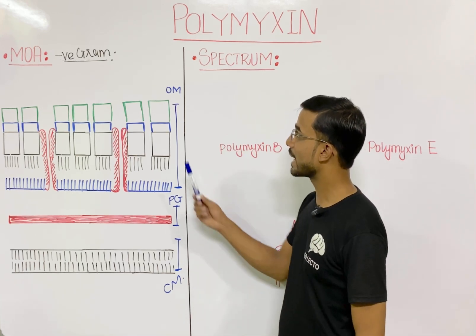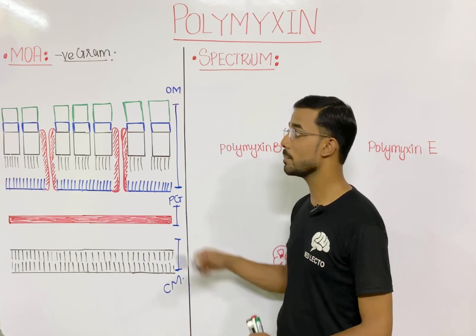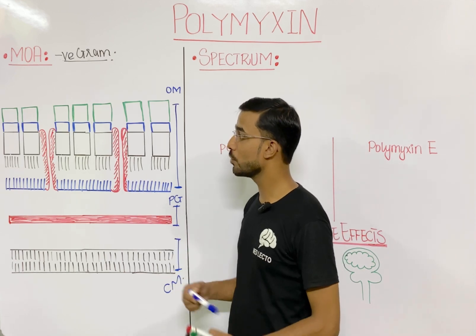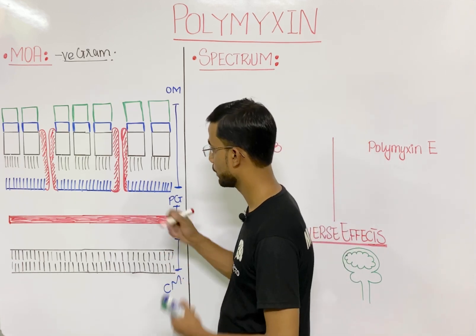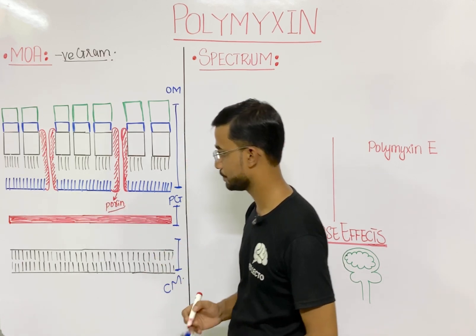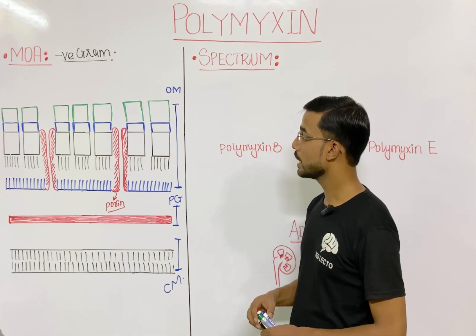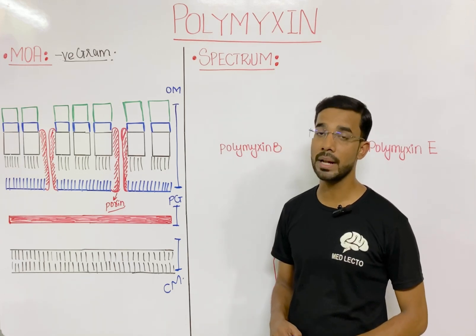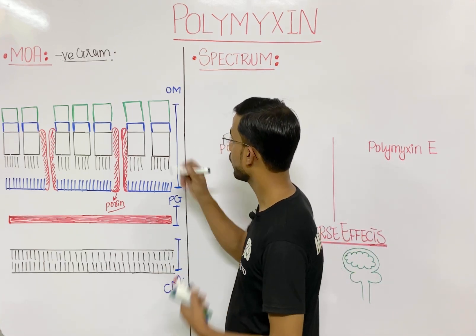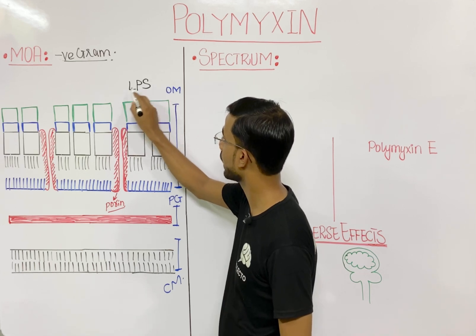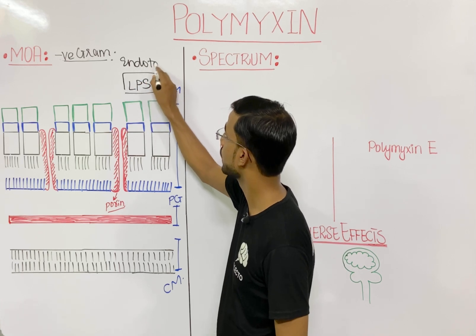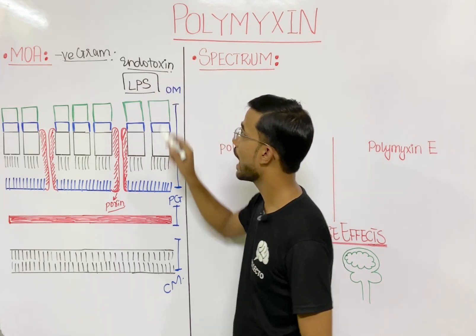If we look at the outer membrane, that is the main action site of polymyxin. In the outer membrane, you will see the presence of porin channels. The most important component in the outer membrane of gram-negative bacteria is the lipopolysaccharide (LPS), also known as endotoxin.